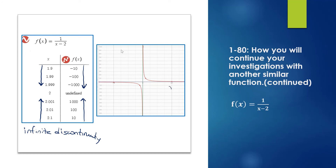The zoomed table shows x at 1.9 and 2.1, and the graph shows the same behavior as before — infinite discontinuity with the inverse function. Notice the horizontal translation pattern: the equation is 1 / (x − h), and our asymptote lands at x = h. With h = 2 the asymptote is at x = 2; with h = 7 it was at x = 7; with h = 3 it would be a horizontal translation of 3 to the right.